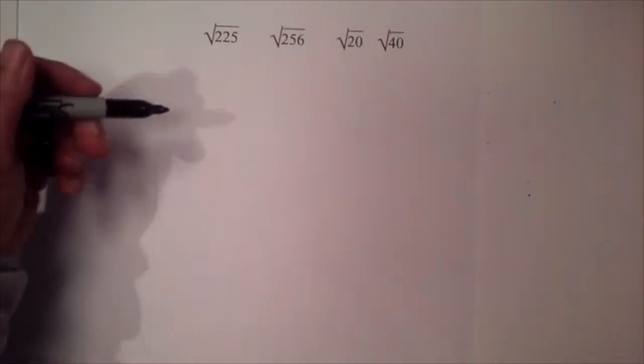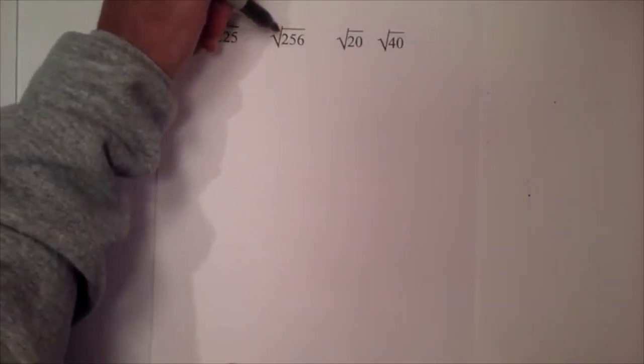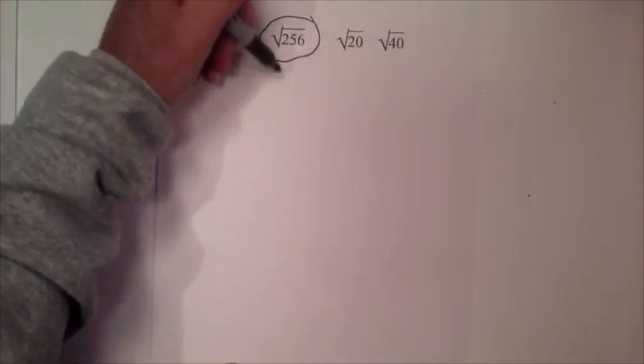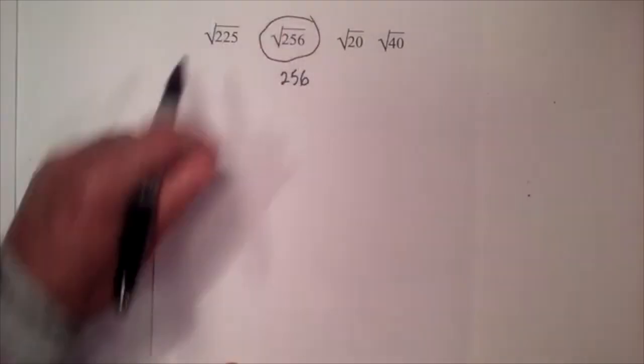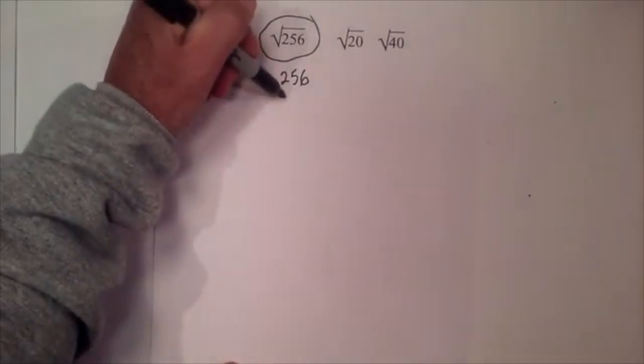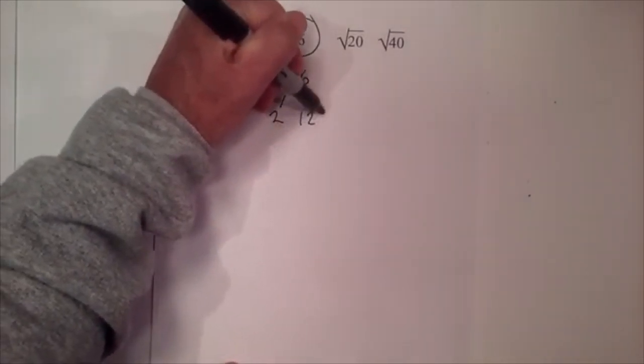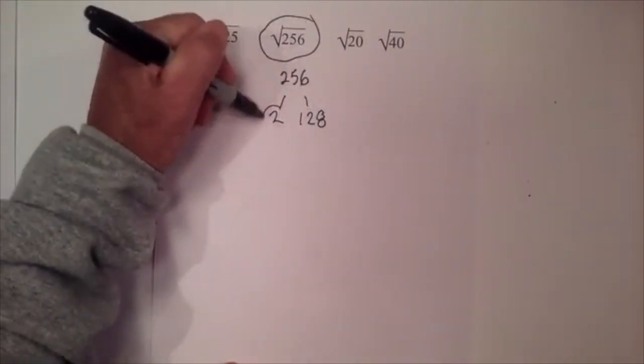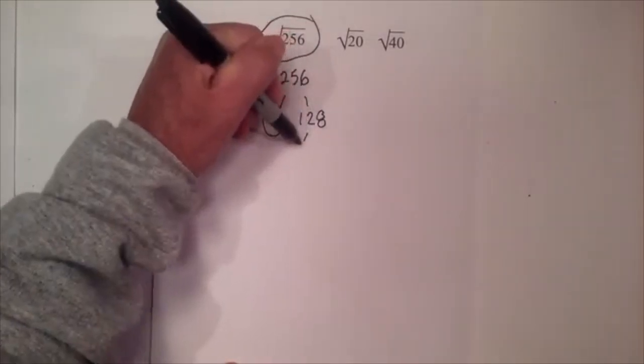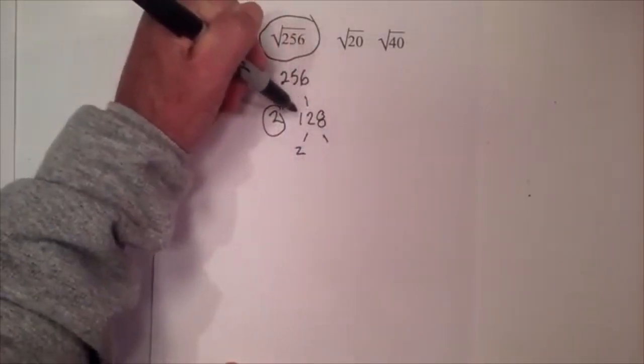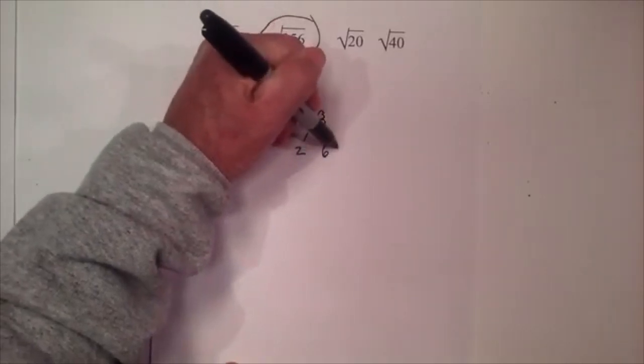Okay, now with 256 I'm going to do the same thing. So I have the square root of 256 and I'm going to complete a factor tree. Let's begin with 2 times 128. I like to use 2's just because I think it's easy, and then 2 into 128 is 64.